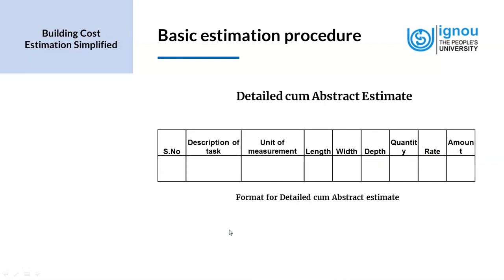We move on to the detailed cum abstract estimate. This is a combination of both the detailed estimate and abstract estimate. Here, we put all the information from the detailed estimate and abstract estimate together. So we have the serial number, description of task, unit of measurement, length, width, depth and the quantity — which is arrived at by multiplying all three. And then we have the rate and the amount. In the previous two slides these were separate, but here we have them all combined together.